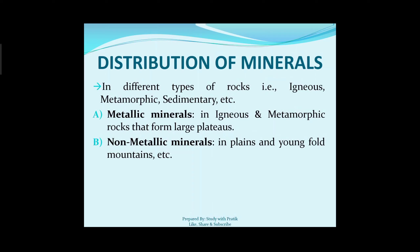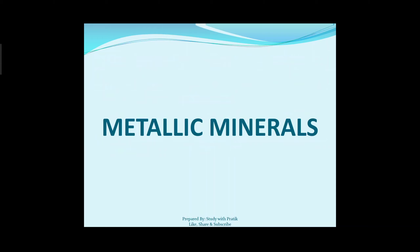In different types of rocks — igneous (aagneya), metamorphic (rupantarit), and sedimentary (avashadi) — we find minerals mostly in the Indian peninsula. There are two important types of minerals: metallic and non-metallic. Metallic minerals are found in igneous and metamorphic rocks, in the large plateaus of India. Non-metallic minerals are found in plains, young fold mountains, and fold mountains. We will now discuss metallic and non-metallic minerals in more detail. First, metallic minerals, which have two sub-types: ferrous and non-ferrous.